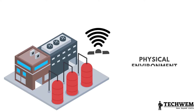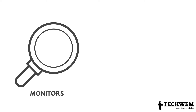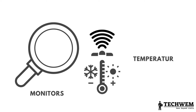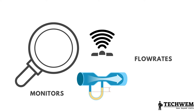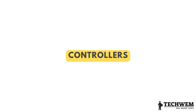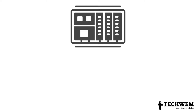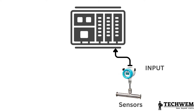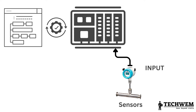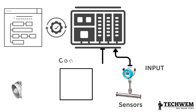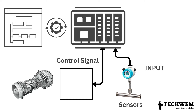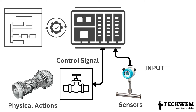Sensors are devices that collect data from the physical environment. In an ICS, sensors monitor various parameters such as temperature, pressure, flow rates and other relevant variables. Controllers are responsible for processing the data received from sensors and making decisions based on predefined logic or algorithms. Actuators are devices that convert control signals from controllers into physical actions or changes in the environment. They can be motors, valves, pumps, switches or any other devices that can physically manipulate the industrial process being controlled.